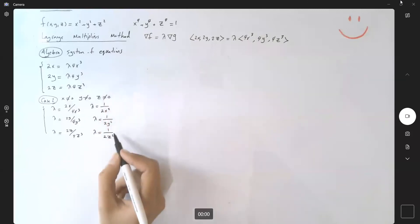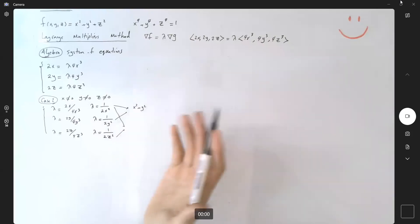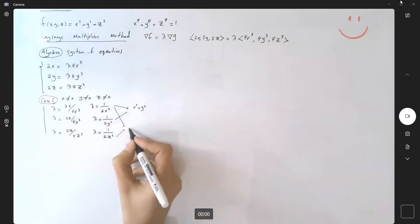We can write it this way. Left-hand sides are equal to each other, so right-hand sides must be equal as well. By setting these equal, you get x² = y². By setting these two equal, x² = z². This is a system of equations. Any algebraic method works.